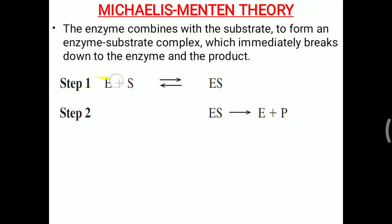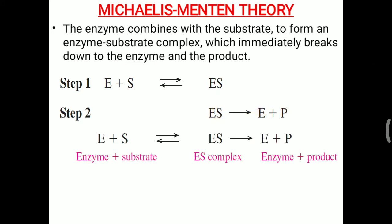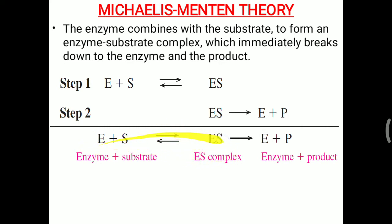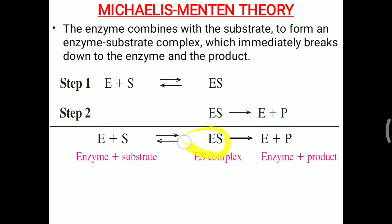There is a two-step reaction: first step, the ES complex is generated; second step, product is generated from the ES complex. So E plus S (enzyme plus substrate) forms an ES complex. This first reaction is reversible — after combining with the enzyme, substrate can revert back. The second step is irreversible: once a product is generated from the substrate, the enzyme cannot convert the product back into the substrate.